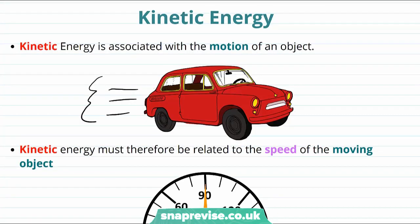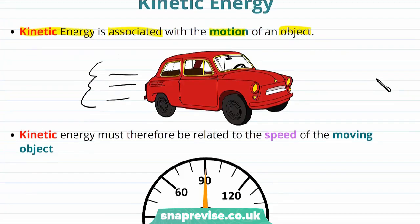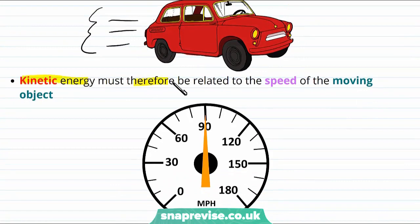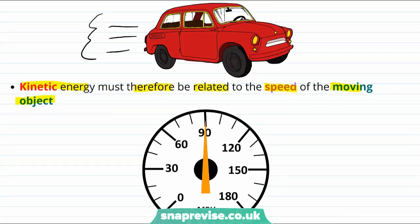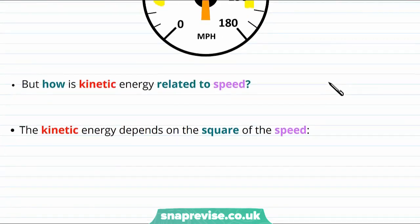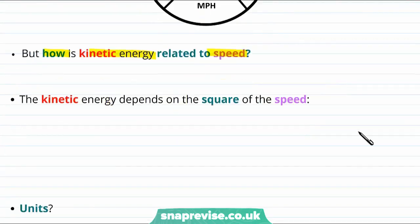Now let's properly introduce the concept of kinetic energy. Kinetic energy is the energy associated with the motion of an object. We imagine that something might have more energy if it's moving fast, or less energy if it's moving slowly. So kinetic energy must be related to the speed of the moving object. If this car was moving faster we would expect it to have more kinetic energy; moving slower, we'd expect it to have less. That's the qualitative part dealt with, but what we really need to do is put some numbers on these things.